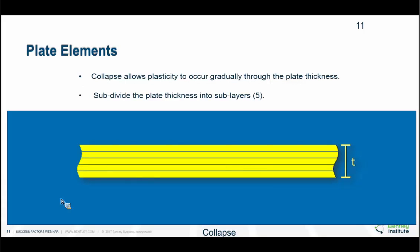The plate is also divided into thicknesses — in general, five sub-layers for each plate. This basically allows the plasticity to develop through the thickness of the plate in a gradual manner.